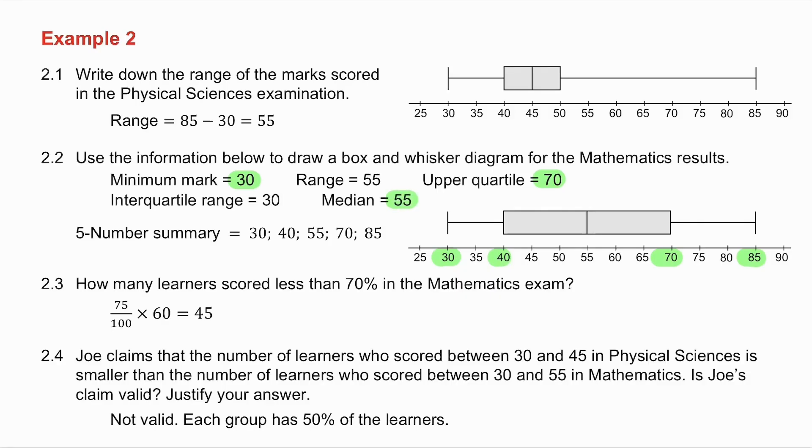And then they gave me that the median is 55. And so I draw the box and whisker diagram for the mathematics results. The next question is how many learners scored less than 70% in the mathematics exam. Now you know in your box and whisker diagram that it's divided into four quartiles. 25% of the data fits here, 25% here, 25% here, 25% here. So what percentage is less than 70%? 75% of my data lies there because there are three quartiles. And 75% of 60 pupils is 45.